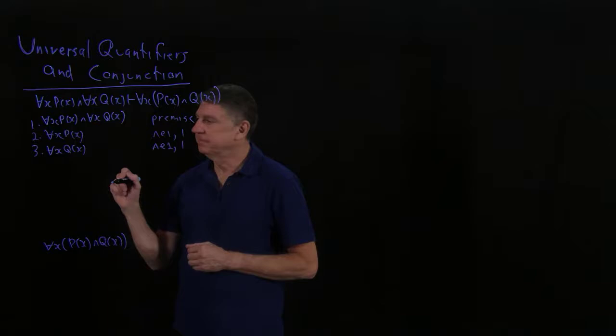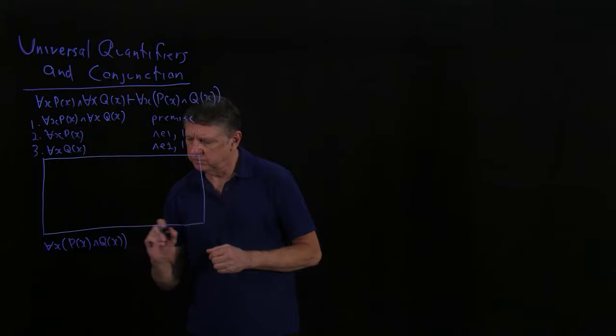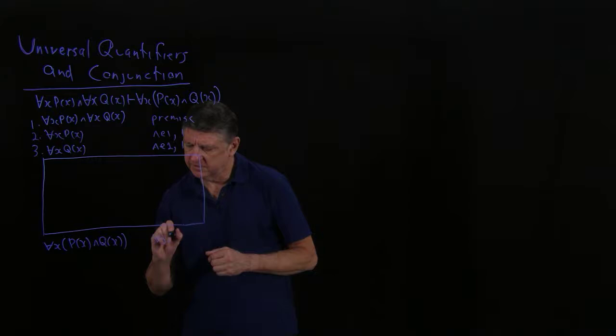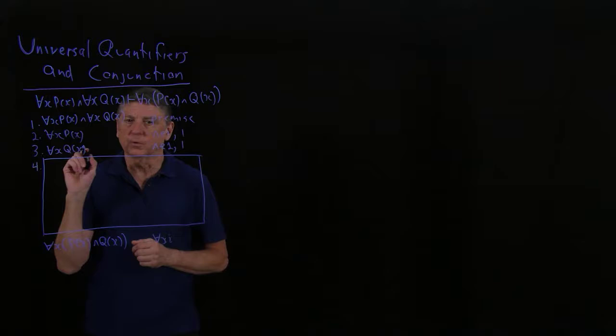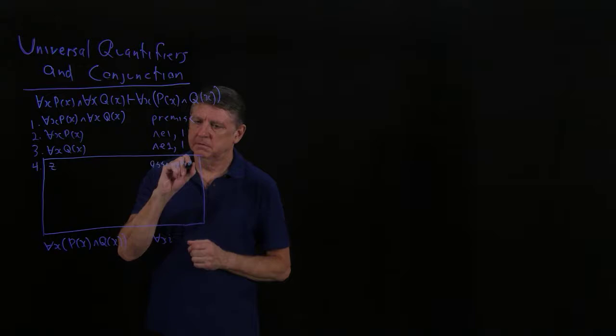So I'll try that. I'll draw my box. And with this box, I'll note that the reason is universal introduction. The box will start at line 4. And for this, I assume a fresh variable. Let's pick the variable z. And that is an assumption.